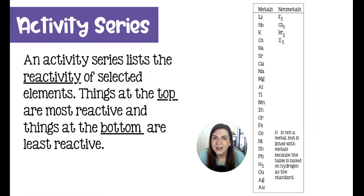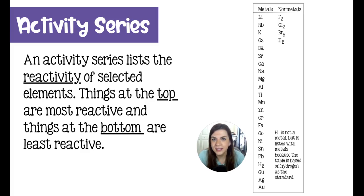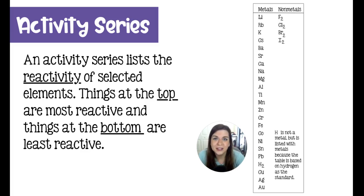I like to define metallic character as the willingness to lose electrons. So the larger a metal is, or the fewer valence electrons it has, the more willing it is to lose those valence electrons. And we can more or less rank this on the activity series.